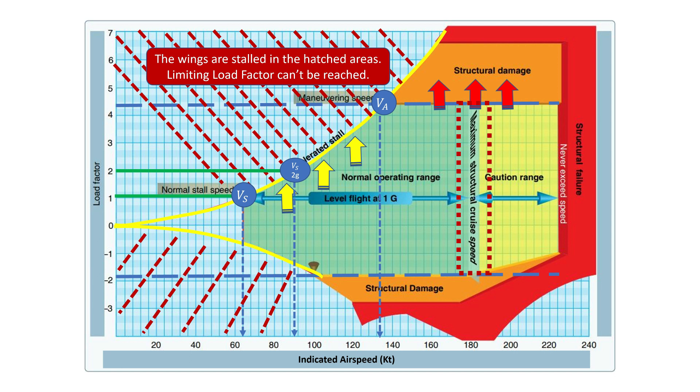A minimum margin between the VNO and the never exceed speed is also required by regulation. Calculation of the gust envelope is a bit complex and outside the scope of this video. However, as seen here, when superimposed on the maneuvering envelope, the gust envelope can affect the final shape of the flight envelope.